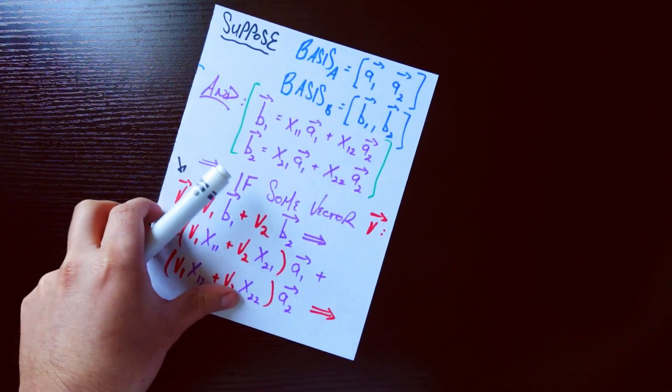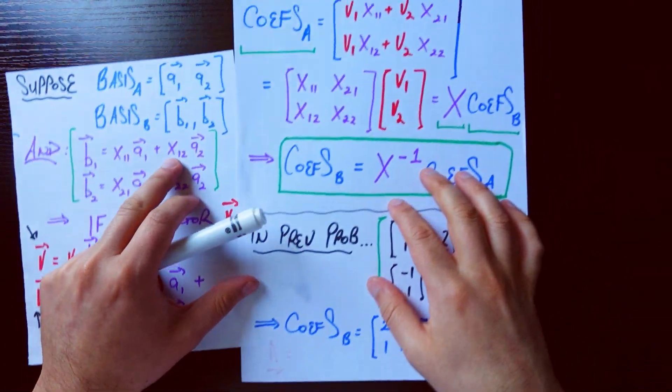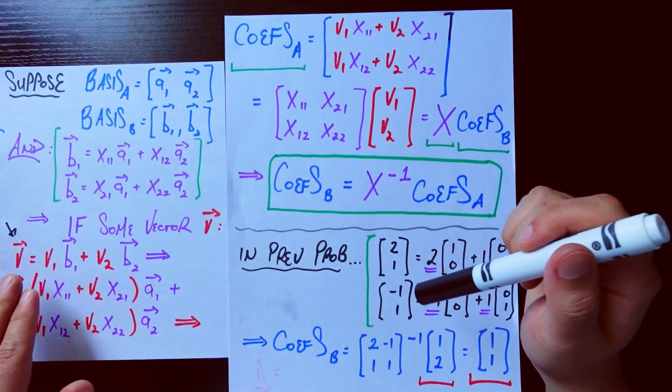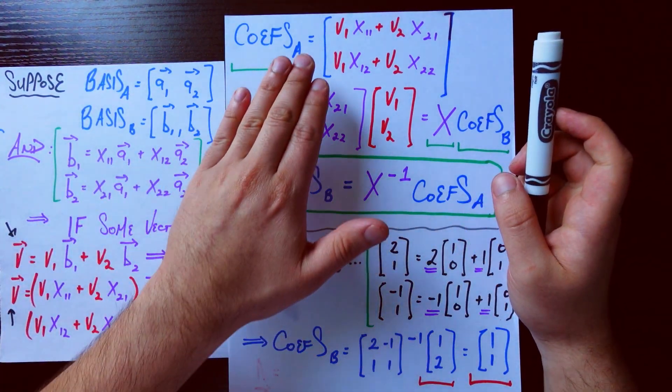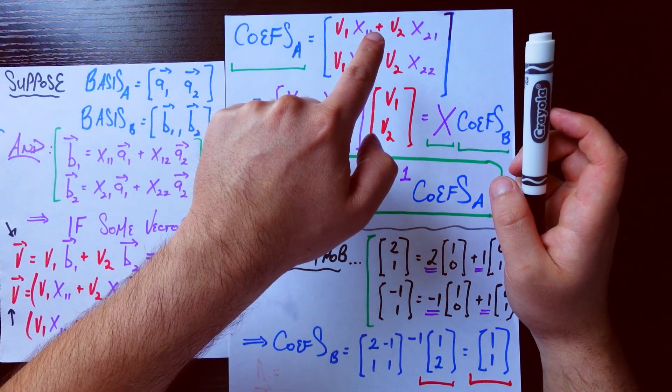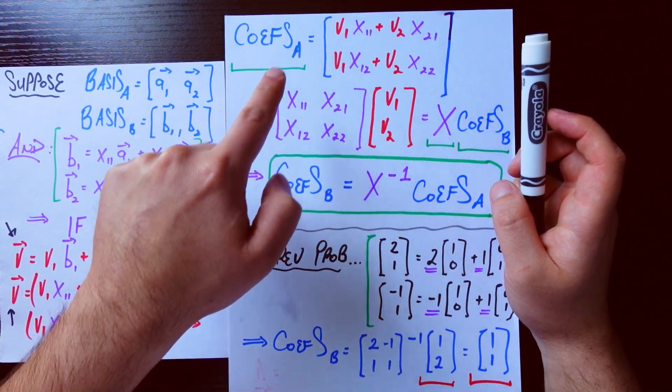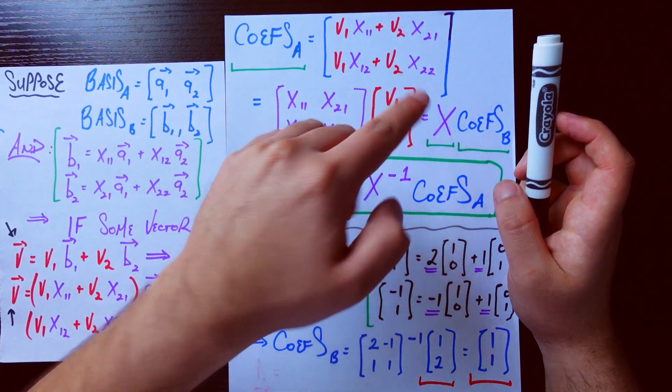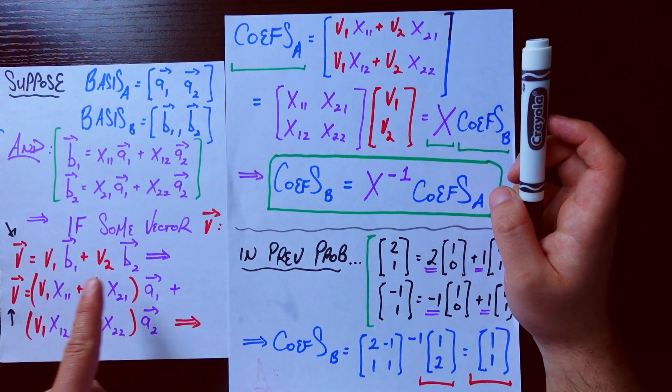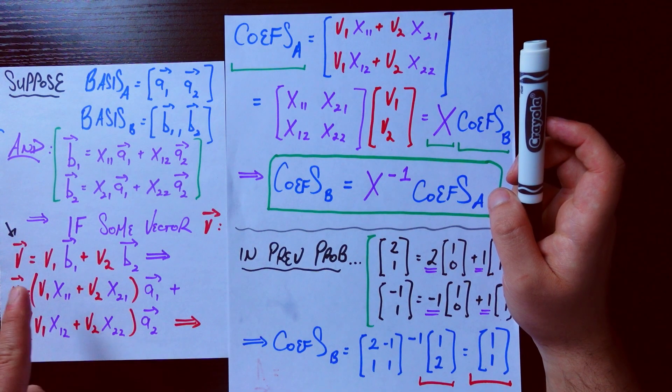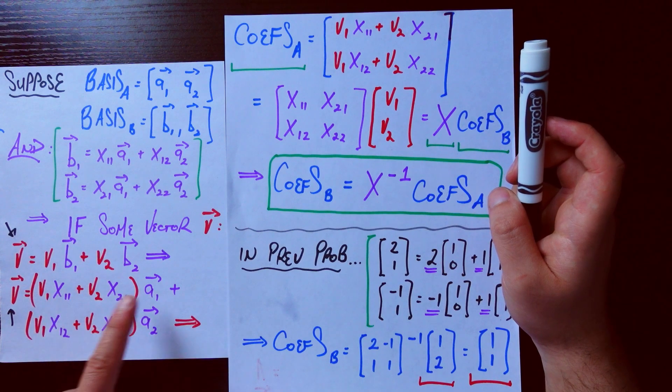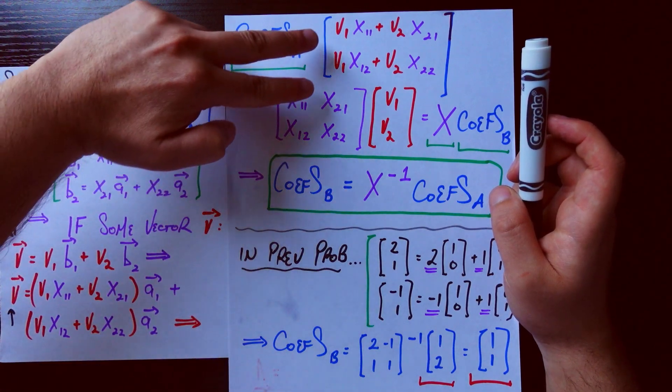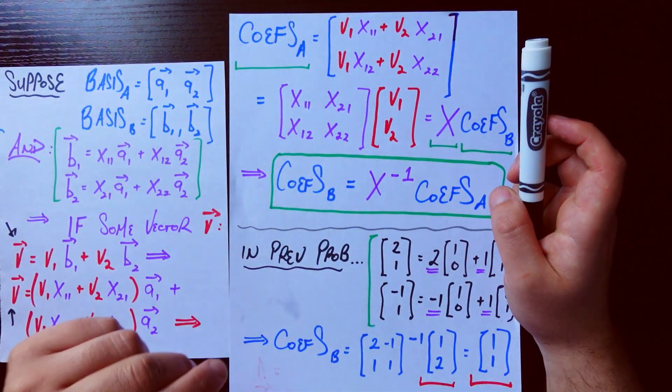So now to start collecting these things in terms of coefficients. We're saying that the coefficients of my vector v in terms of basis A are v1*x11 + v2*x21. And the other coefficient is v1*x12 + v2*x22. Where am I getting these from? These are exactly the forms you see here. So we're saying that v is represented as this much of a1 plus this much of a2. And therefore those are called my coefficients of basis A.